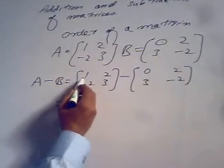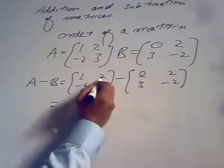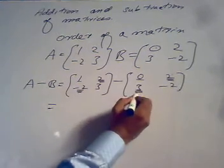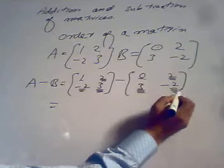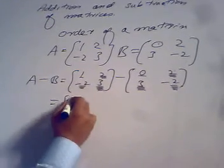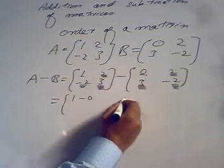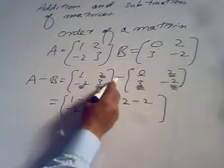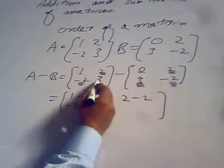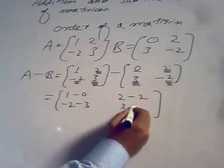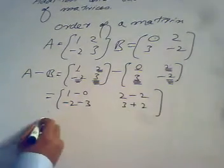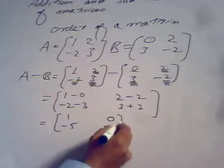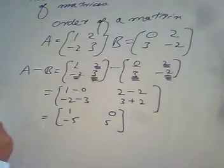The element corresponding to 1 is 0, so we get 1 minus 0. Corresponding to 2 is 2, giving 2 minus 2. Corresponding to -2 is 3, giving -2 minus 3 which is -5. Corresponding to 3 is -2, giving 3 minus (-2) which is positive 5. So the answer is [1, 0; -5, 5]. This is how we add and subtract matrices. Thank you.